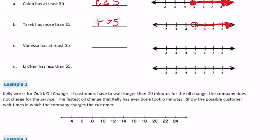Part C: Vanessa has at most five dollars, so she could have five dollars or less. Vanessa is less than or equal to five dollars. I color in the circle because it includes five, and the arrow points left. Part D: Li Chen has less than five dollars, so I leave the circle open because it does not include five dollars, and point the arrow left.